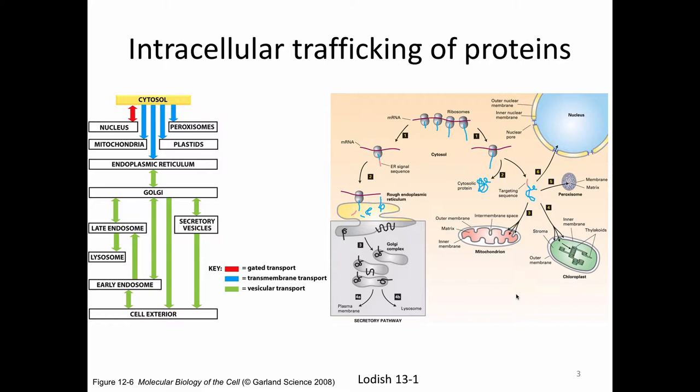When proteins are made in the cell, they can be made on free ribosomes as free cytosolic proteins. Alternatively, ribosomes can bind to the ER to form the rough ER, and the protein can be synthesized directly across the membrane. The cell uses the same energy it was using to make the proteins to also mechanically shove it across the membrane. Once a protein is in the vesicular transport pathway, it can go through the Golgi, to the plasma membrane, or to the lysosome.